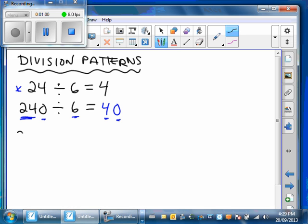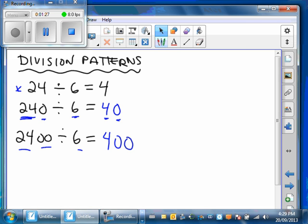What if we had 2400 divided by 6? We simply say, what's 24 divided by 6? That's 4. How many zeros do I have? I have two zeros. So 2400 divided by 6 is 400.